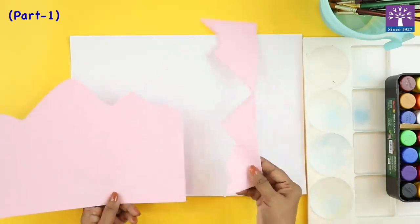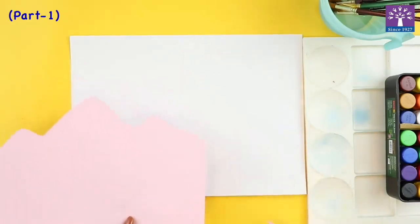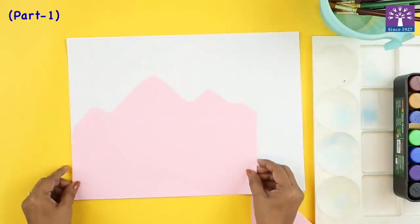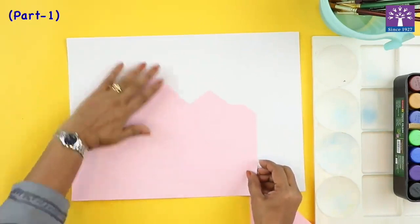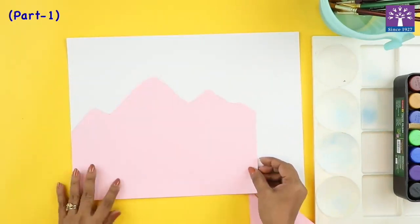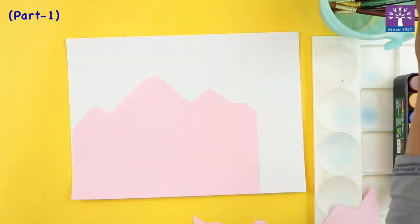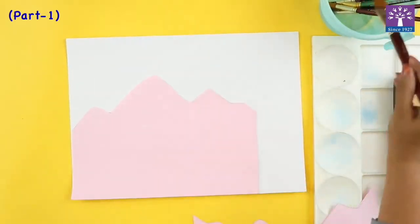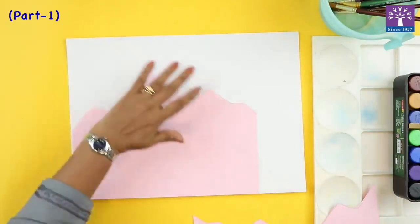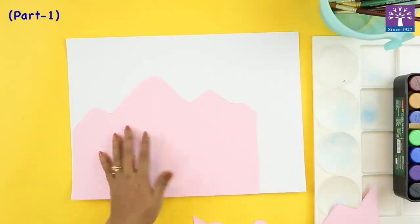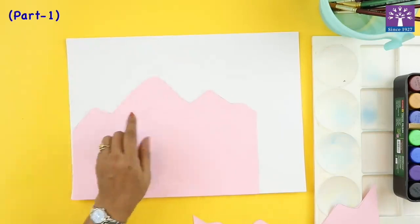I'm not throwing away this paper. I might need this later. This will be the upper part, which is going to be my sky. I'm taking a flat brush. I'm going to paint the sky first, holding this and painting the sky upwards so that my color is not spreading down and I'm getting clean mountains.